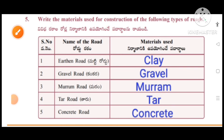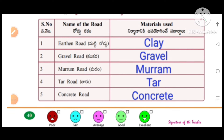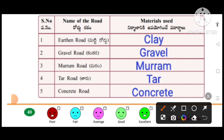Write the materials used for construction of the following types of roads. First one — earthen road: material used is clay. Gravel road: gravel. Murram road: murram. Tar road: tar. Concrete road: concrete.